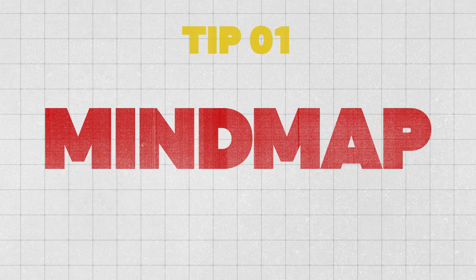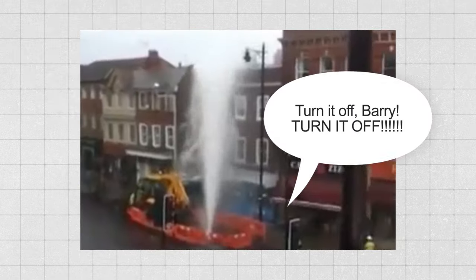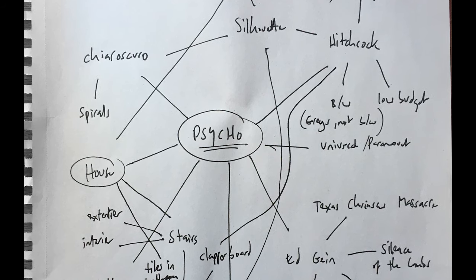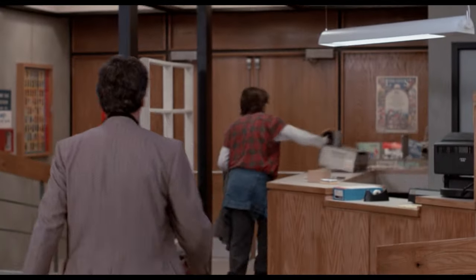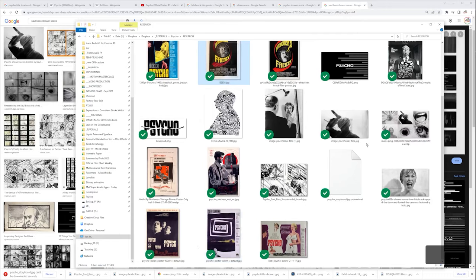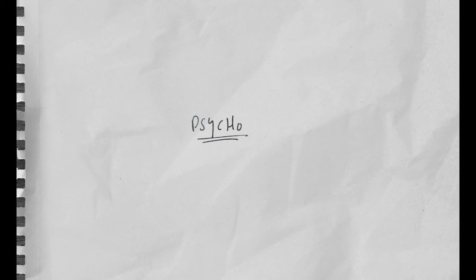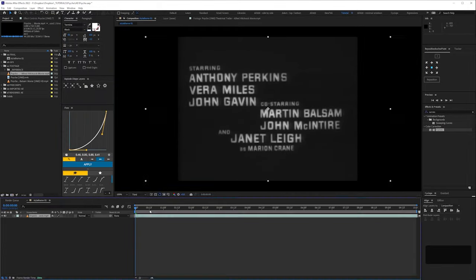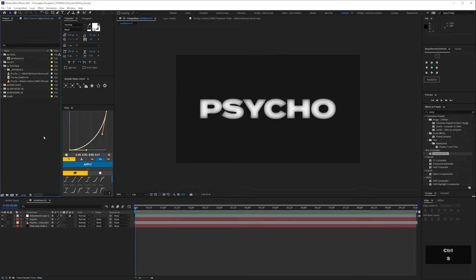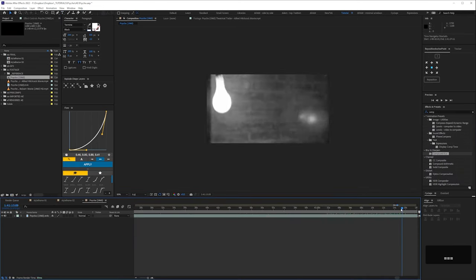Tip 1: Mind map. Unfortunately, there isn't a magic ideas tap we can just turn on — would that it were so simple. I find the mind mapping part a little bit like being made to do my GCSE homework all over again. It's undoubtedly good for linking themes and motifs, making connections, especially if you're collecting imagery at the same time. Everyone starts with a blank page, literally or metaphorically. When I sat down to create this animation, I had no idea what I was going to make. I'd been listening to an audiobook on the making of Psycho, so that was the arbitrary jumping-off point — to make a looping animation on the film Psycho.